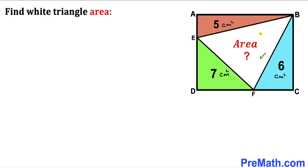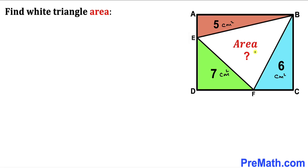The white triangle, the blue one, the green one, and this orange one — such that the area of the orange triangle is 5 cm², the area of the blue triangle is 6 cm², and finally the area of the green triangle is 7 cm². Our task is to calculate the area of this white triangle BEF.